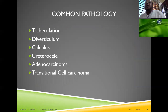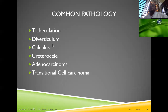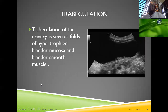We now look at normal and abnormal pathologies of the adult urinary bladder. We can diagnose trabeculation, diverticulum, calculus, ureterocele, and neoplasm. Trabeculation of the urinary bladder is seen as folds of hypertrophied bladder mucosa and smooth muscle — giving a coarse, irregular appearance to the bladder wall.